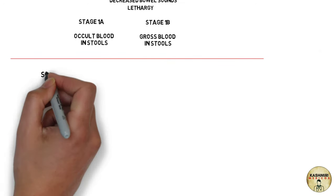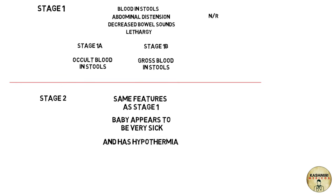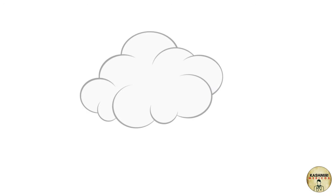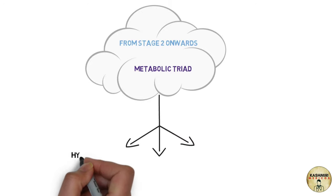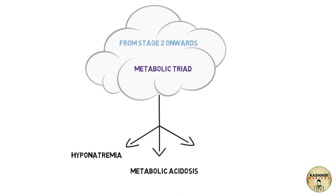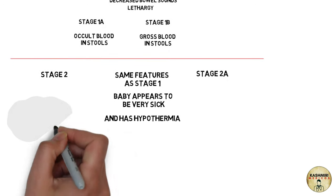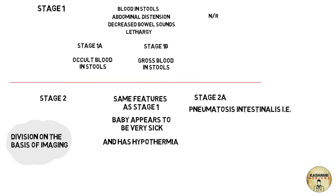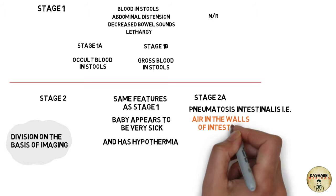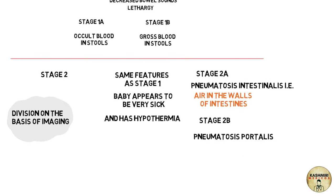In stage two, the baby has the same features as stage one, but appears very sick and also has hypothermia. From stage two onwards, a particular metabolic triad is seen: hyponatremia, metabolic acidosis, and thrombocytopenia. Stage two is divided by imaging: stage 2A shows pneumatosis intestinalis — air in the walls of the intestines — while stage 2B shows pneumatosis portalis, which is air in the portal vein.